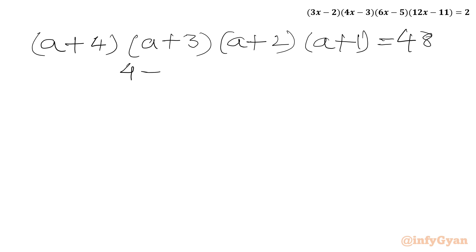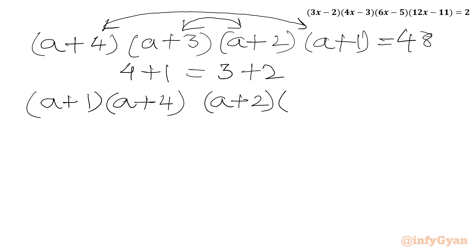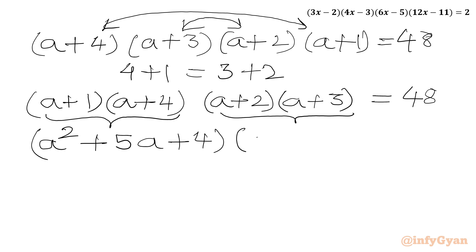Now if I add 4 and 1 that equals 3 plus 2, so we will combine these two bracket pairs. We write (a plus 1)(a plus 4) and (a plus 2)(a plus 3). Multiplying (a plus 1)(a plus 4) gives a squared plus 5a plus 4. Multiplying (a plus 2)(a plus 3) gives a squared plus 5a plus 6. Equal to 48.